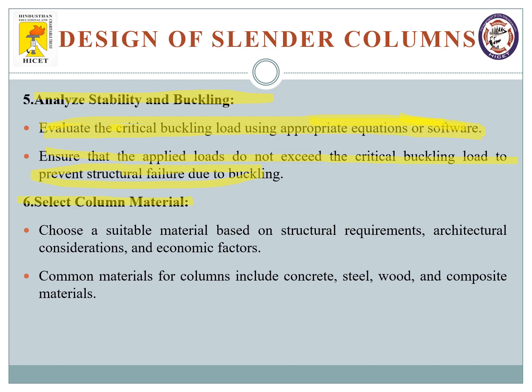The next part is selecting column material. We choose a suitable material based on structural requirements, architectural considerations, and economic factors. Common materials are concrete, steel, wood, and composite materials. In India, we prefer concrete or steel, and composite materials are slowly coming into the picture. Based on these parameters, we select and finalize our material for the slender column.